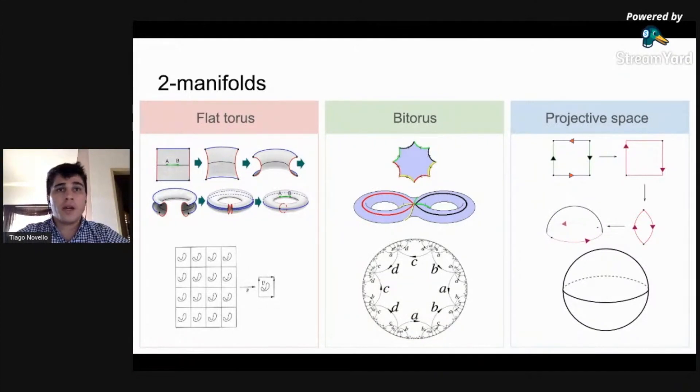On the middle, the bitorus has a hyperbolic structure. For this, we identify in a special way the edges of a regular polygon of eight sides. Any other orientable compact surface except the sphere and the torus is constructed in a similar way.